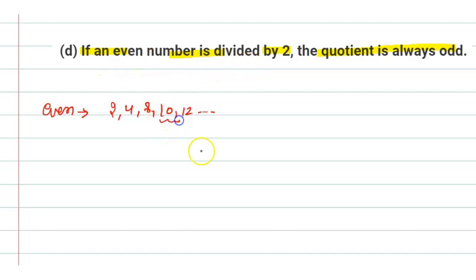Now, the statement is: if an even number is divided by 2, the quotient is always odd. Let us consider the even number 10 divided by 2. Then 2 fives are 10, so the quotient is 5.